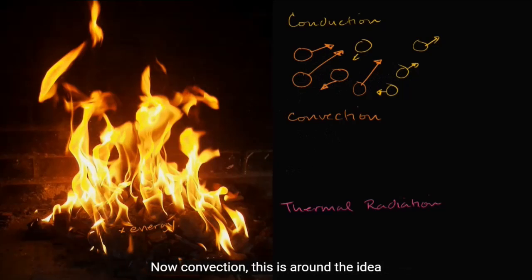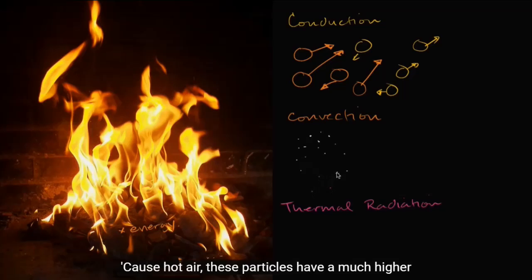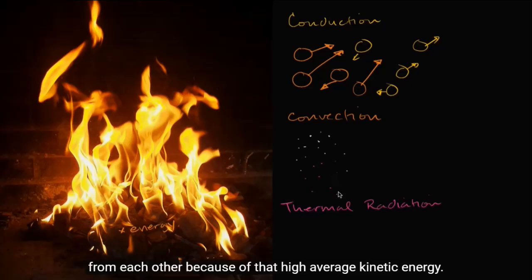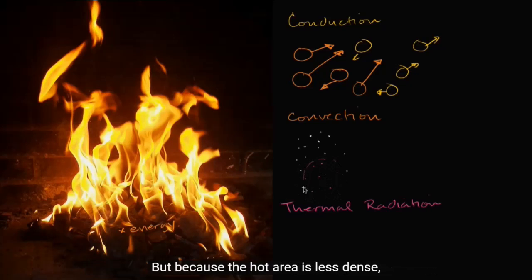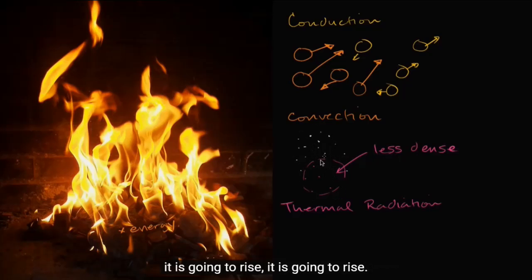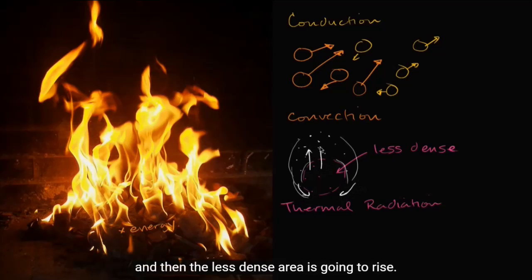Now convection is around the idea that hot air is less dense. If we have a bunch of air particles here, the cool air up here is going to be more dense than the hot air. Because hot air particles have much higher kinetic energy, they're going to bump into each other and push each other much further away, getting more separation because of that high average kinetic energy. Because the hot area is less dense, it is going to rise, or you could think of it as the more dense area falling around it to go under it, and then the less dense area rising.